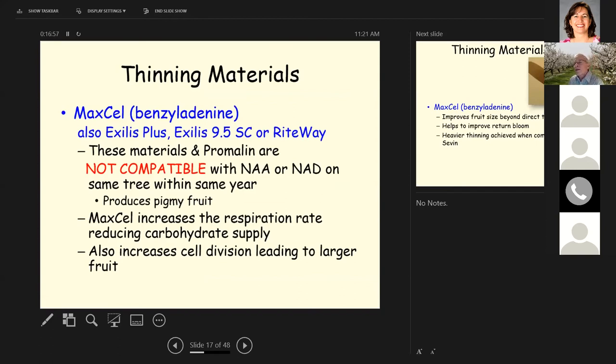A third product is Maxell. This is a growth regulator, benzyl adenine. It's also sold as Exilis, Exilis 9.5 SC or RiteWay. These materials and chromalin are not compatible with NAA or NAD on the same tree within the same year. It's going to produce pygmy fruit. So this is a combination you definitely don't want to use. Maxell increases the respiration rate or the consumption of carbohydrates in the tree, reducing the carbohydrate supply. And this causes the weaker fruits to drop off. This also increases cell division because this is a growth regulator and can lead to larger fruits. So this is a nice product to use on smaller fruited varieties.